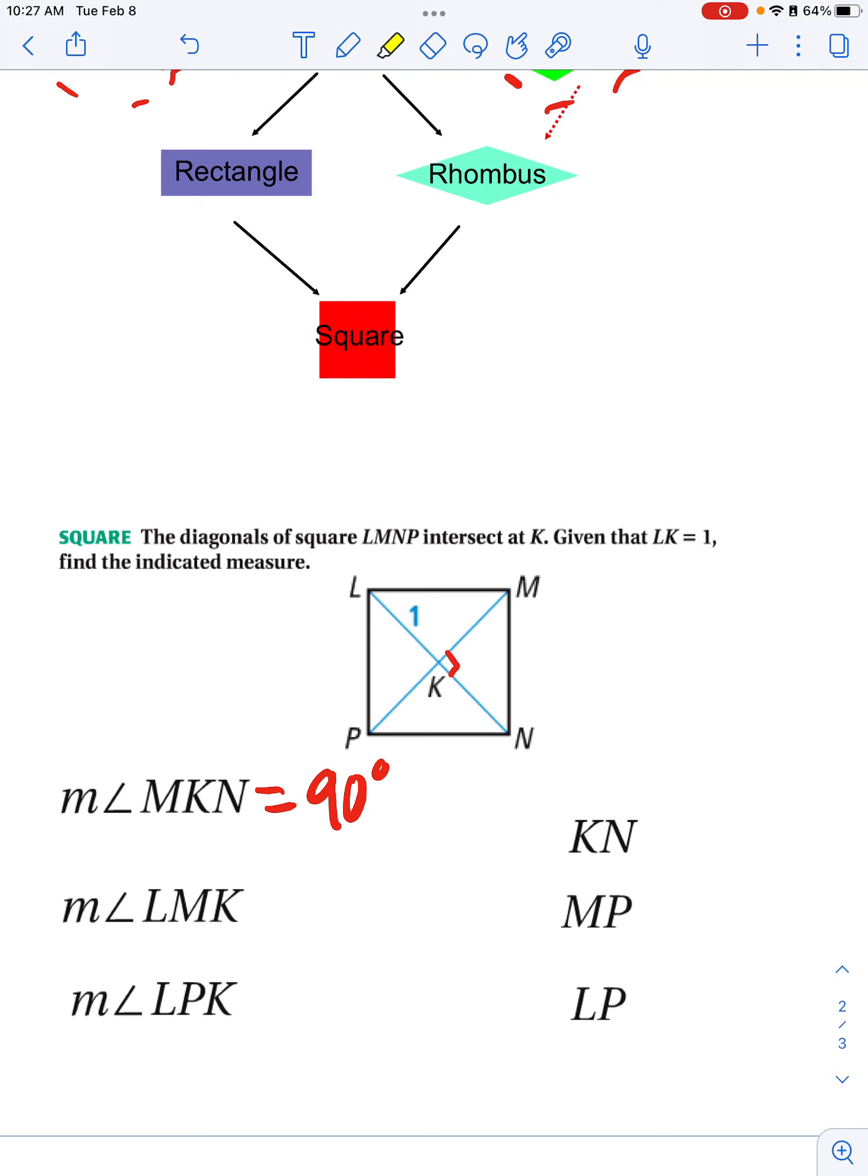Measure of angle LMK, so that's this angle right up here. And again, I know that the entire angle is 90 degrees, which means if I cut it in half, I'm going to have angle LMK is going to be half of that, which is 45.